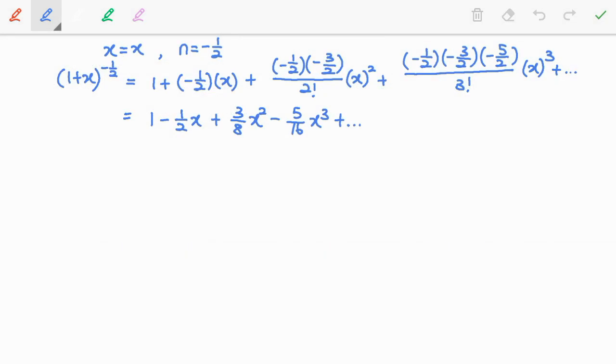Next, let us state the range of validity for this expansion. This expansion is valid for absolute x is less than 1. Or in other words, x is between negative 1 and 1. So the interval is negative 1, 1.